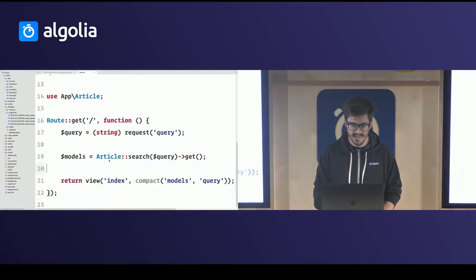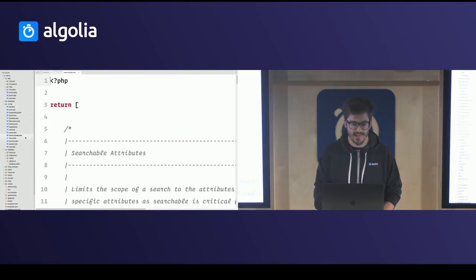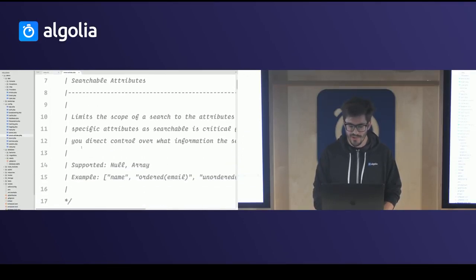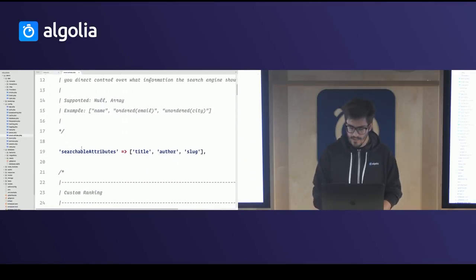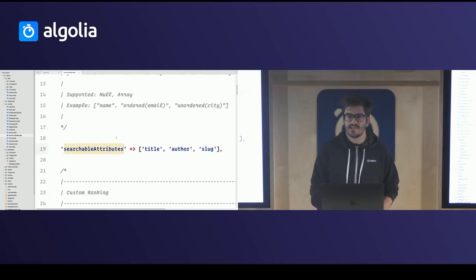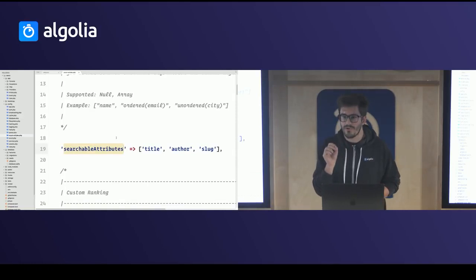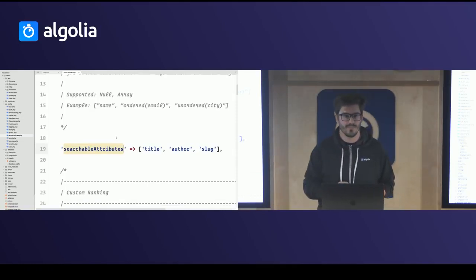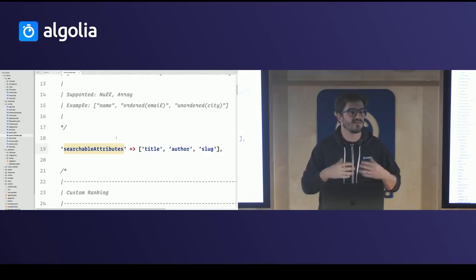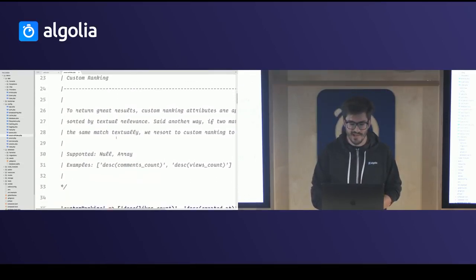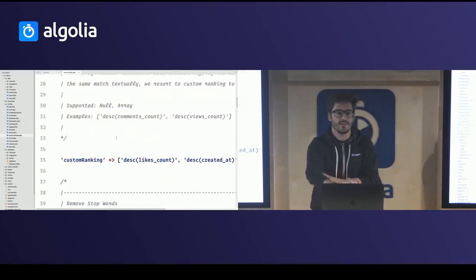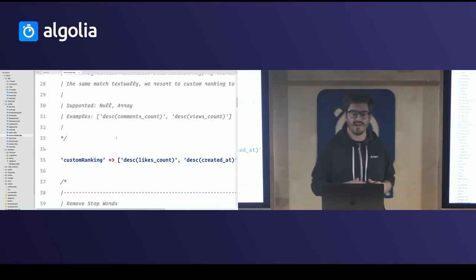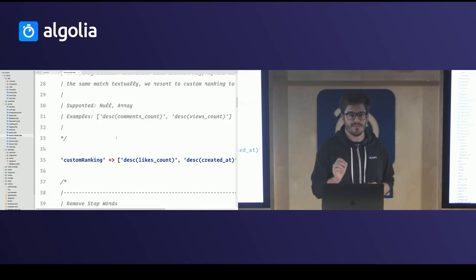The settings file is created under config/scout, named after the model. Scout Extended detected that only the title, the author, and the slug should be searchable — so the problem of having the image URL as a searchable attribute is no longer there. Scout Extended also detected that the custom ranking is the number of likes descending, which means the Taylor Otwell article will be displayed in first place in search results.